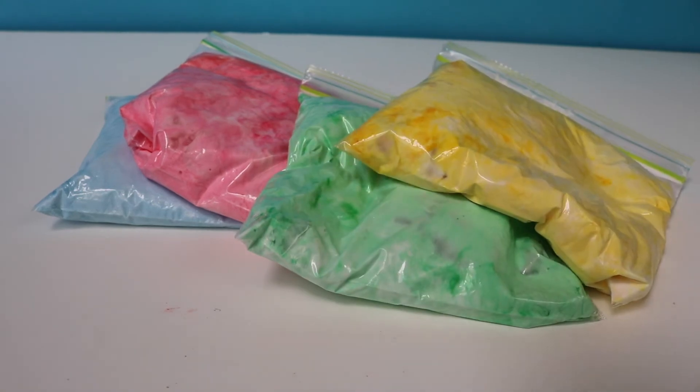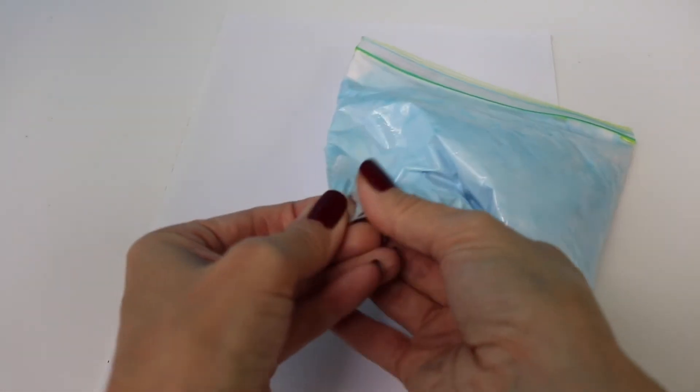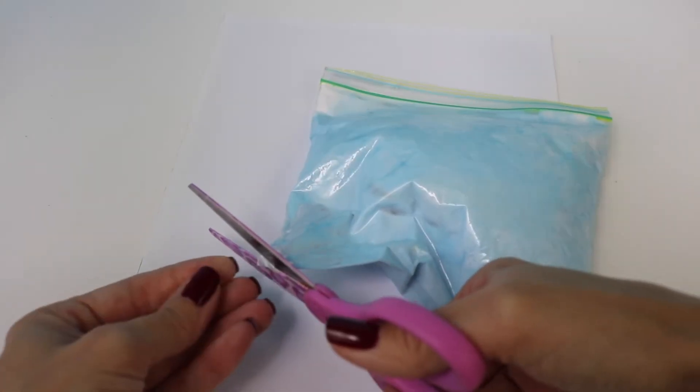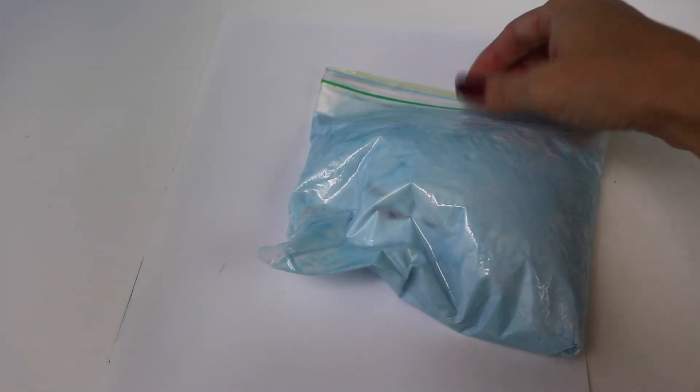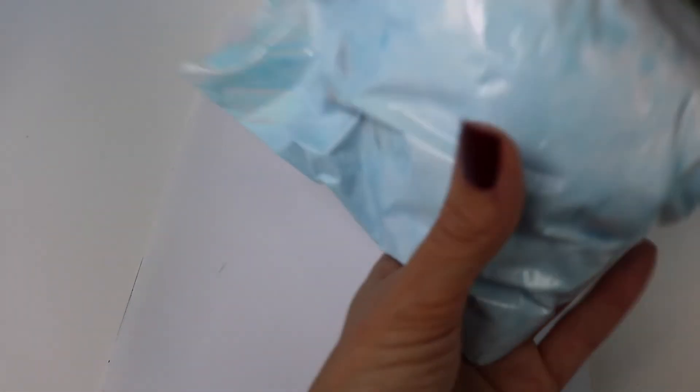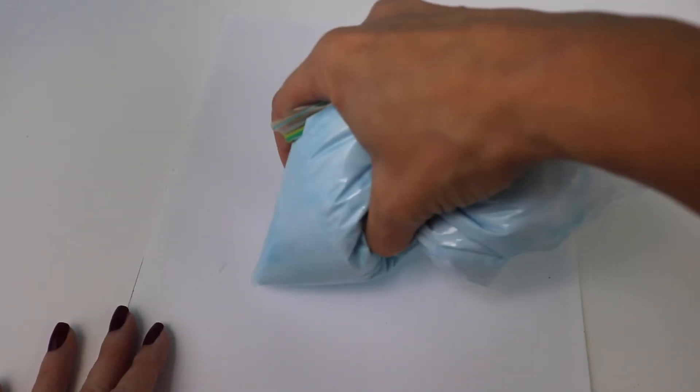Look at all the colors we made. Blue, pink, green and yellow. Now to use the puffy paint it's simple. Just push the puffy paint and then simply cut a corner. The smaller the corner that you cut, the smaller the paint will come out in a thinner line. So let's take a look at how this comes out.